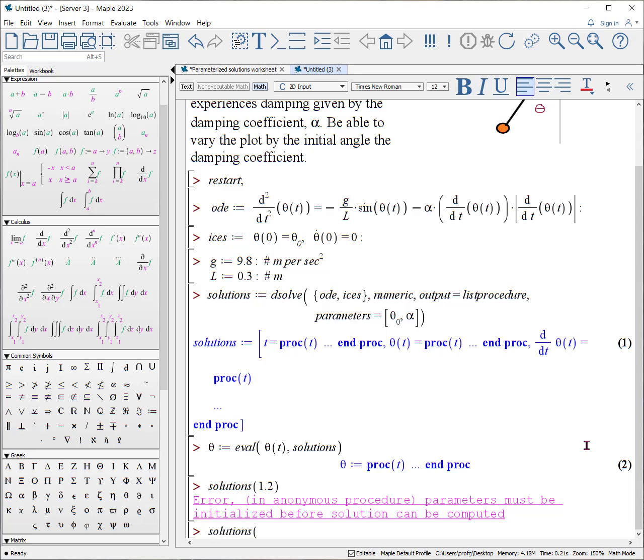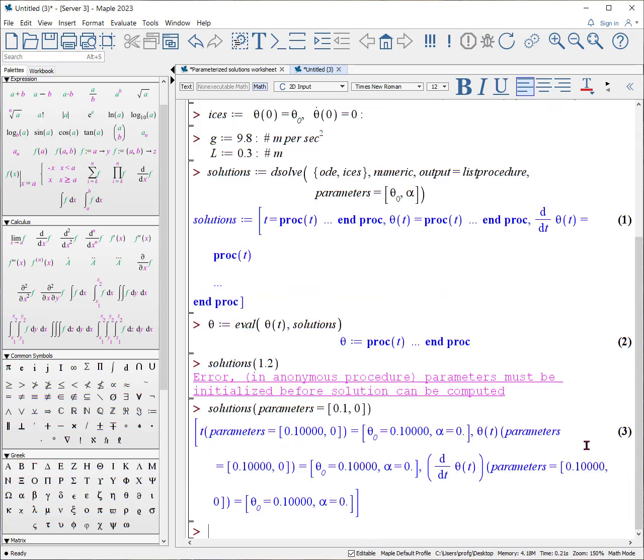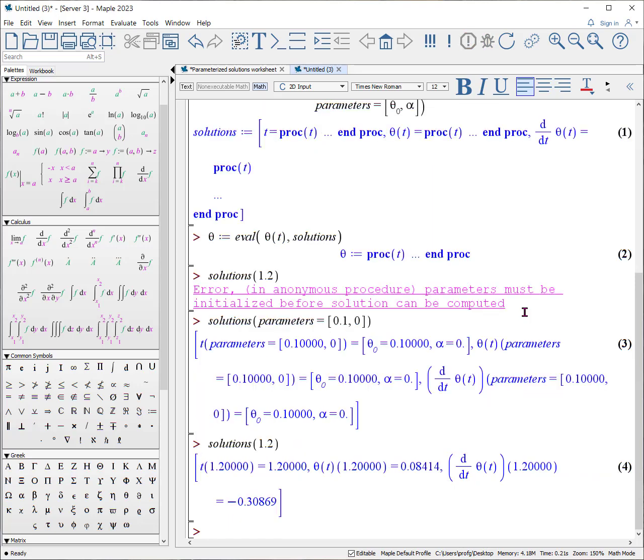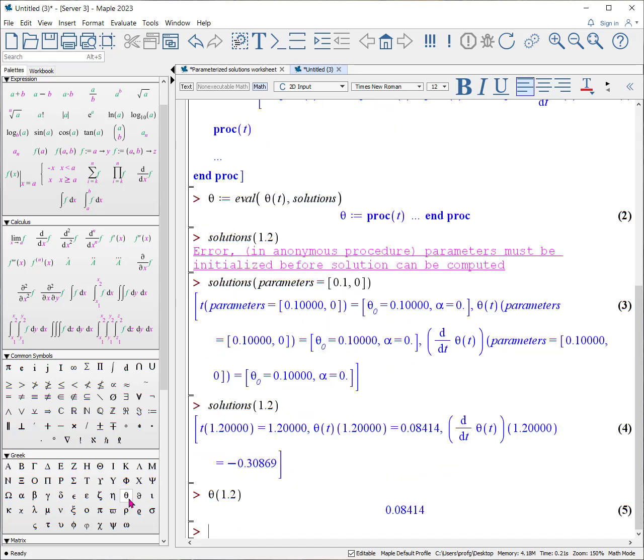So the way to get this to work is we actually have to give it some values. So you say solutions, because you call the solutions group of procedures, and you tell it that the parameters are some values. The first one is θ₀ and the second one is α. So we'll put in 0.1 radians for the initial angle and zero for the coefficient of the friction, basically the air resistance. All right, and what it does is it will substitute those values in to all the procedures that we're going to use. So now if we ask what are the solutions at a value time of 1.2, it can actually give us the value out. In fact, if we say what is θ at 1.2, it will return our value.